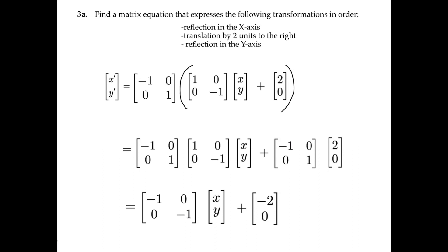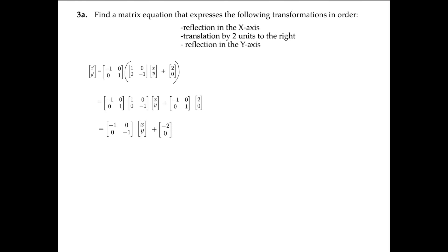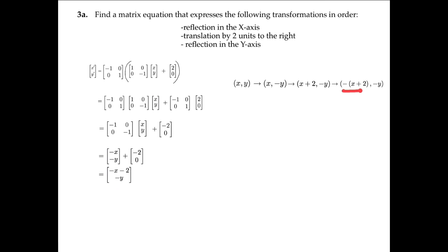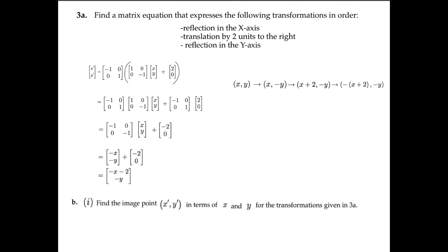Let's look at what the image point is. Starting with the original point, we apply the reflection in the x-axis, then translate by two units to the right, and then reflect in the y-axis to get our image point. Another way to obtain the image point is to combine these matrices as we've done before. We get the same answer, but with the x-coordinate expanded. We also now have our answer to the next question: the image point x-prime, y-prime is negative x minus two, negative y.